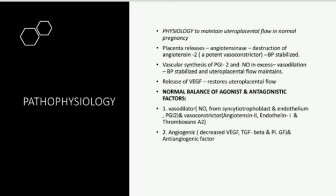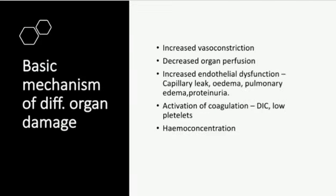The underlying basic pathology is endothelial dysfunction and intense vasospasm acting on almost all vessels, especially of the uterus, kidney, and brain. The responsible agent for dysfunction and vasospasm seems to be humoral in origin. The basic mechanism of organ damage: there is increased vasoconstriction, decreased organ perfusion, increased endothelial dysfunction leading to capillary leak, edema, pulmonary edema, and proteinuria. This leads to activation of coagulation factors, finally resulting in DIC, low platelets, and hemoconcentration.